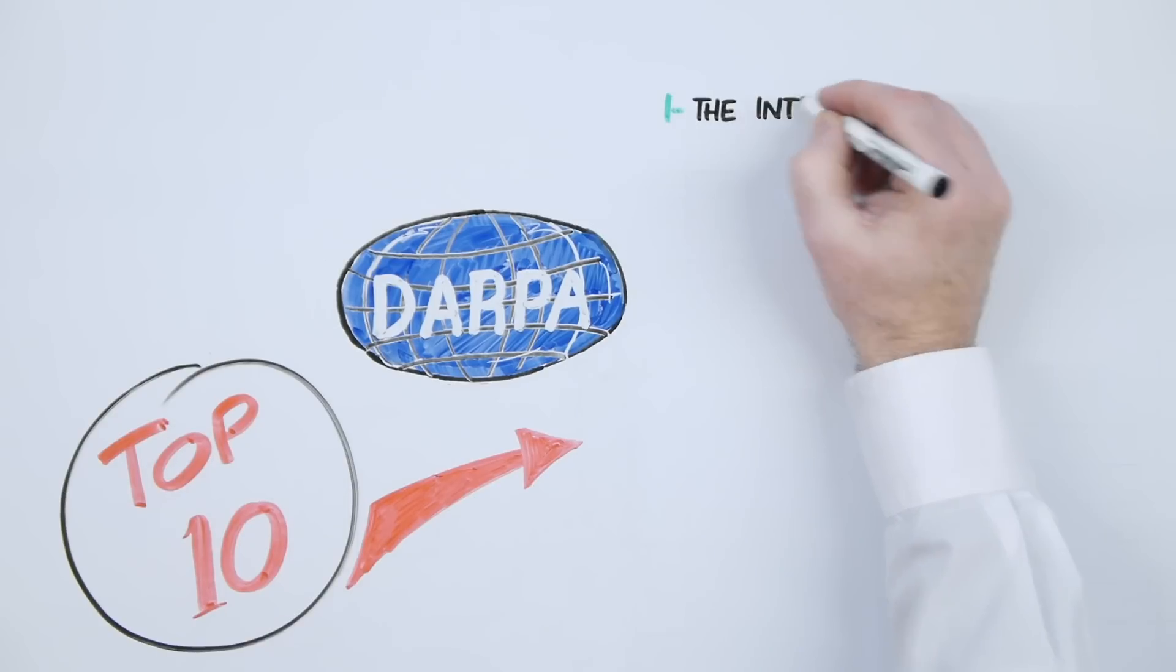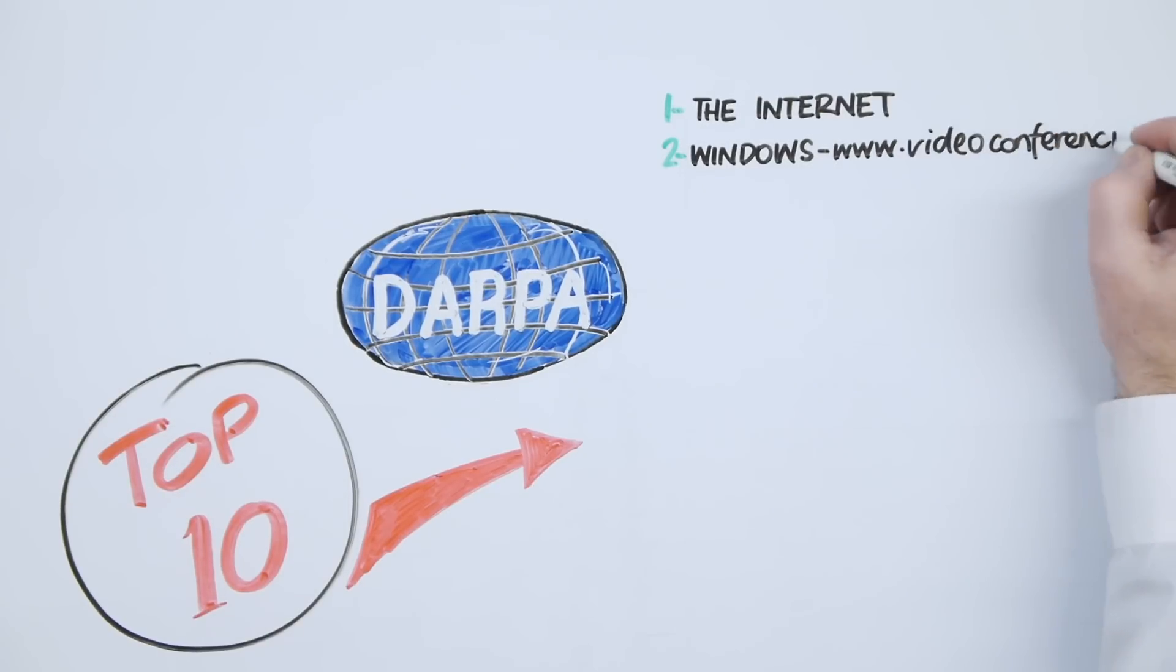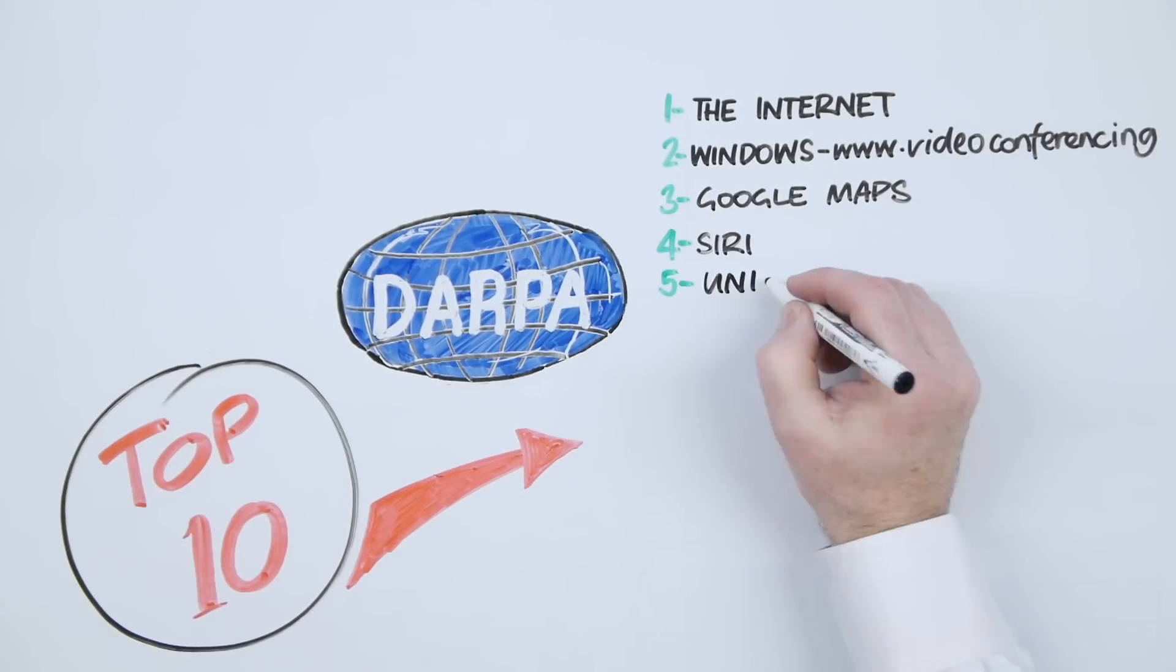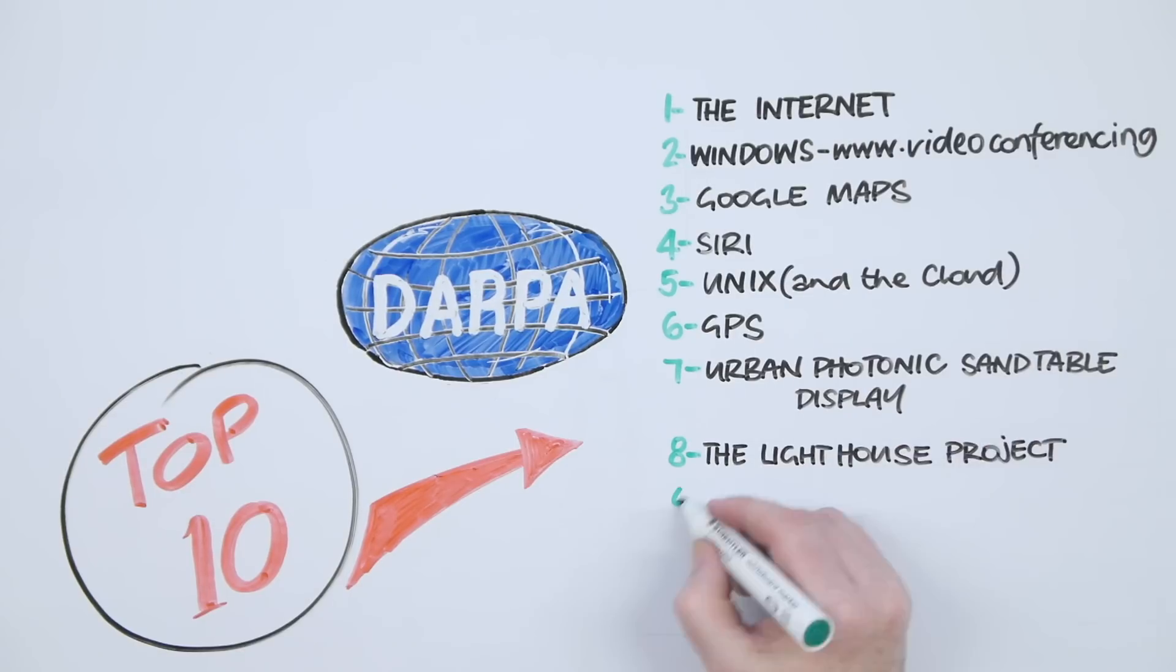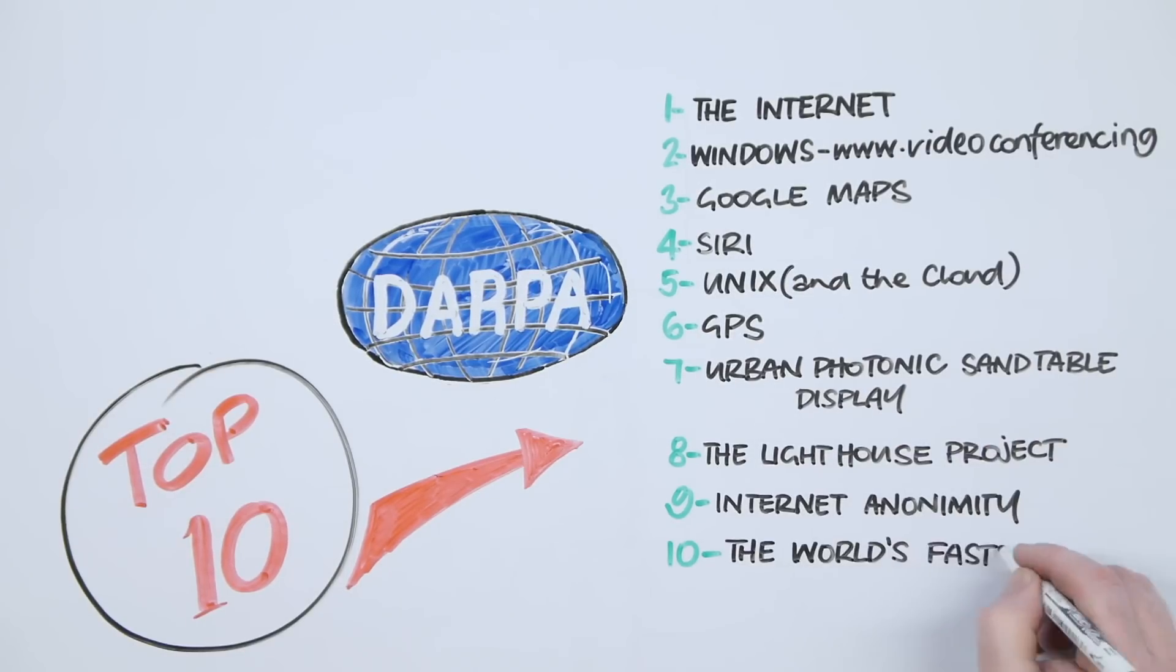Years later, that research, known as the Lighthouse Project, was named one of DARPA's ten most groundbreaking innovations of all time, alongside GPS, Unix, Google Maps, and the creation of the Internet itself.